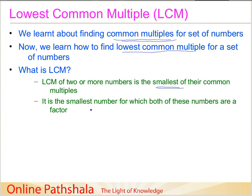To put it in another way, it is the smallest number for which both of these numbers are a factor — that is, both numbers are going to be factors of that smallest number. It could be two or more numbers depending on how many we are considering. I think it will be more clear if we take an example.